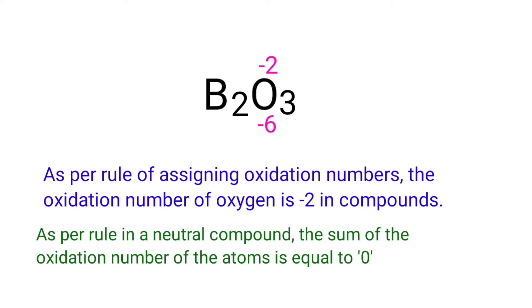As per rule in a neutral compound, the sum of the oxidation number of the atoms is equal to zero. So the numbers along the bottom must add up to zero. So the number under B2 must be plus six.